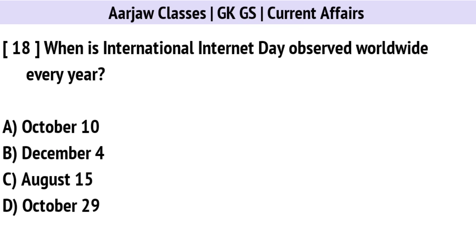When is International Internet Day observed worldwide every year? The correct option is D: On 29th October.